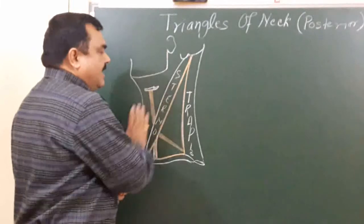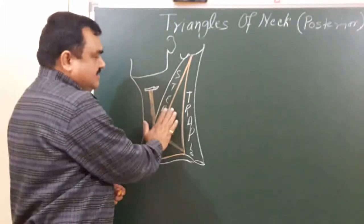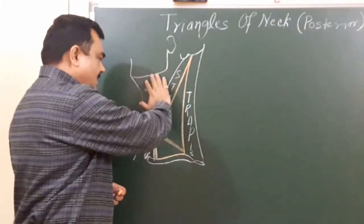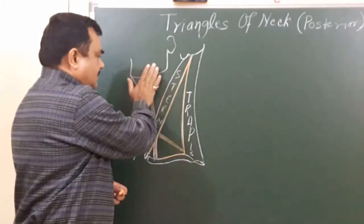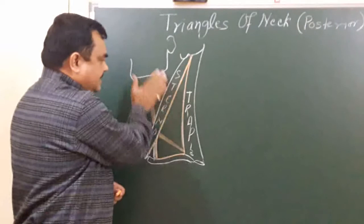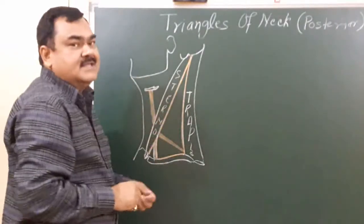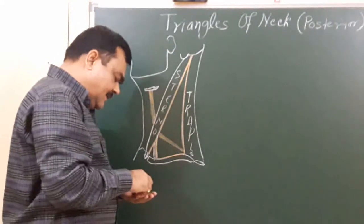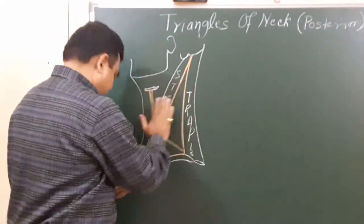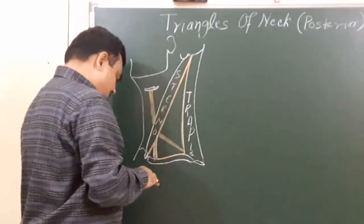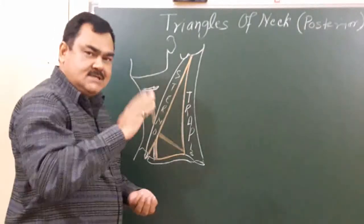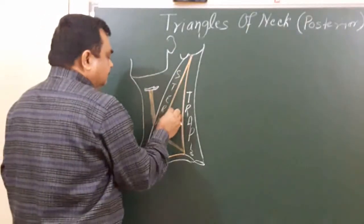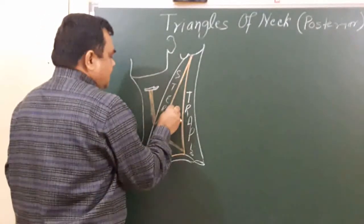Now we will discuss about the roof. The roof is covered by skin, then superficial fascia. The superficial fascia contains the platysma muscle. We will now see the contents of the superficial fascia.